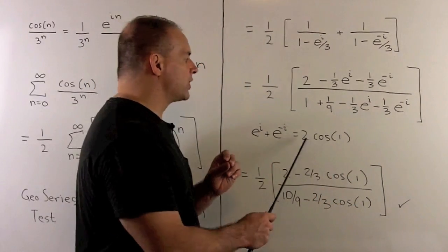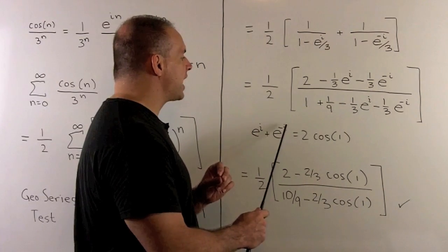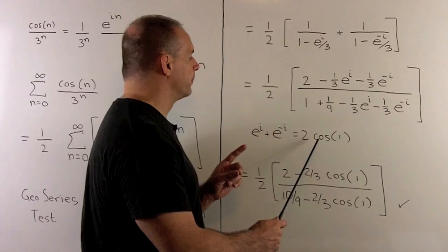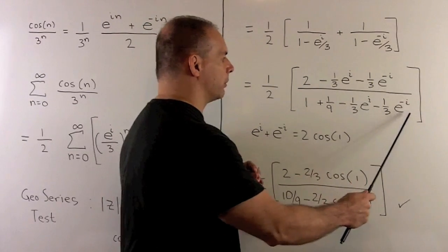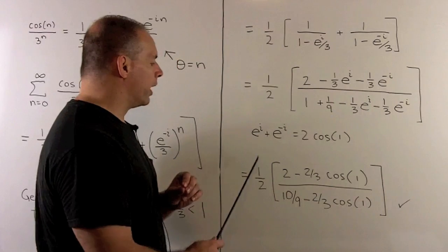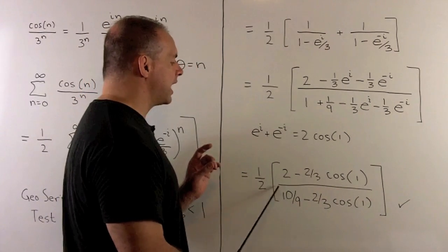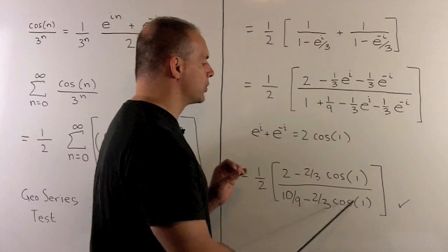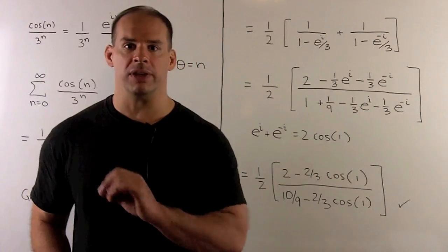So we have the cosine of 1 is equal to e to the i plus e to the minus i over 2. I'll move the 2 to the other side. So now I can remove this term and this term here to get 1 half, 2 minus 2 thirds cosine of 1 over 10 ninths minus 2 thirds cosine of 1. And that's the sum we get on the previous board.